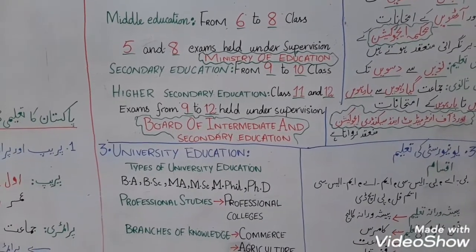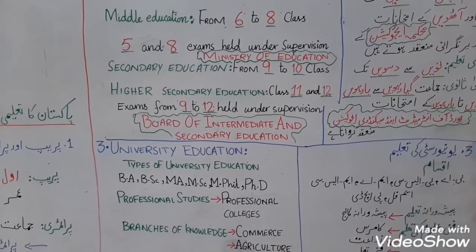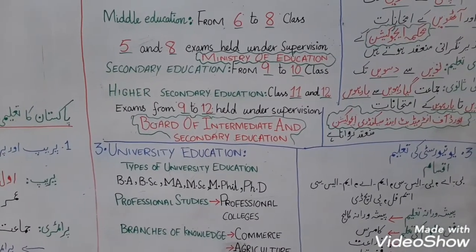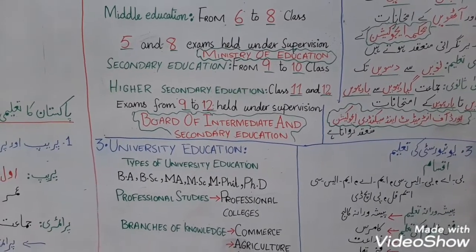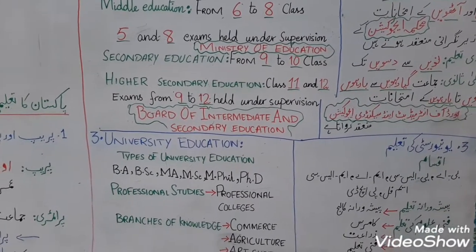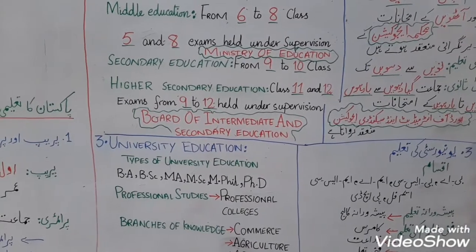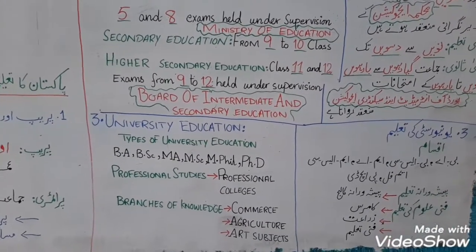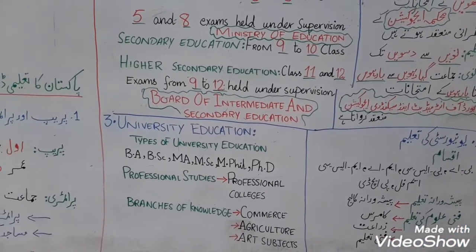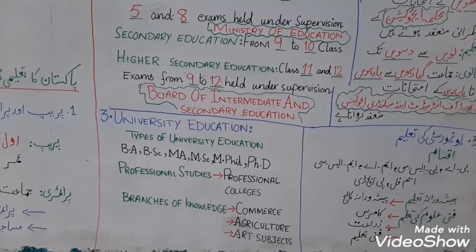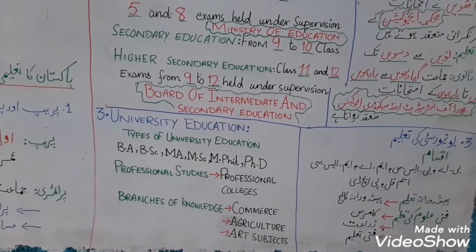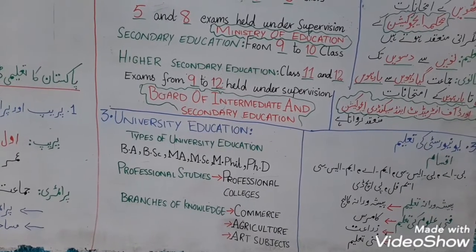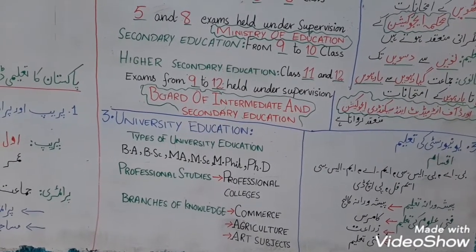The third stage is University Education. There are many types of University Education, which include BA, BSC, MA, MSC, MPhil and PhD. After Higher Secondary Education — that is, after class 11 and 12 — University Education commences.